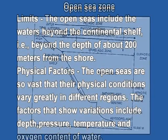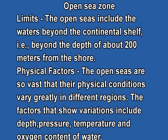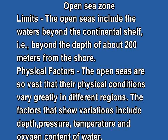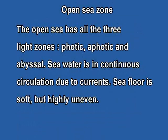Open sea water includes areas beyond the continental shelf — beyond the depth of 200 meters from the shore. The physical conditions vary greatly in different regions. The factors that show variation include depth, pressure, temperature, and oxygen content of the water. The open sea has all three light zones: the photic zone, the aphotic zone, and the abyssal zone. Sea water is in continuous circulation due to water currents.